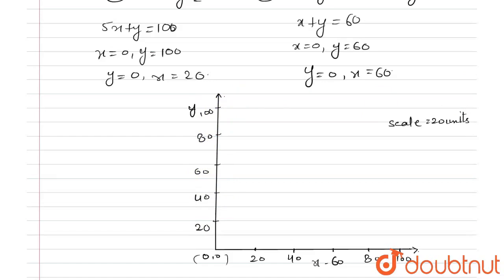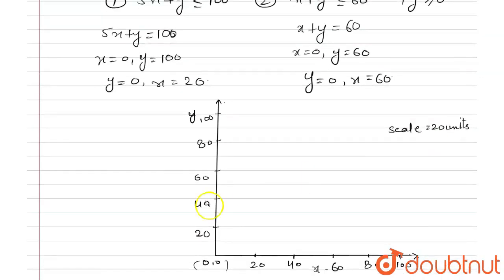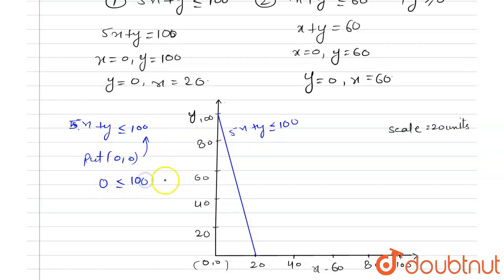Now we plot the region 5x plus y ≤ 100. First we draw the line 5x plus y equals 100: when x equals 0 then y equals 100, and when y equals 0 then x equals 20. To find which side contains the region, we put the origin (0, 0) into the inequality. We get 0 ≤ 100, which is always true, so the region is on the origin side of the line.